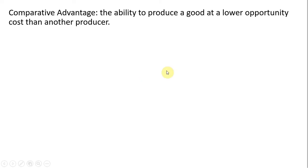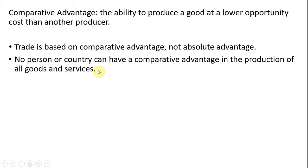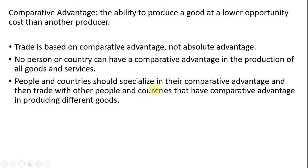In this video, we're going to go over comparative advantage. Comparative advantage is the ability to produce a good at a lower opportunity cost than another producer. Trade is based on comparative advantage, not absolute advantage. No person or country can have a comparative advantage in everything. People and countries should specialize in their comparative advantage and then trade with others that have a comparative advantage in producing different goods.